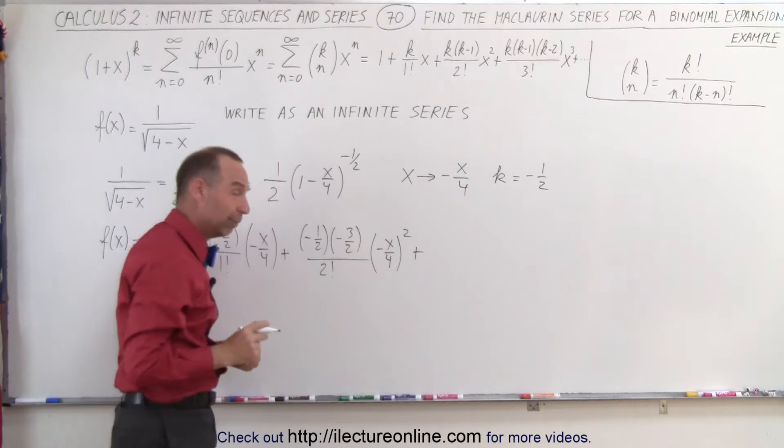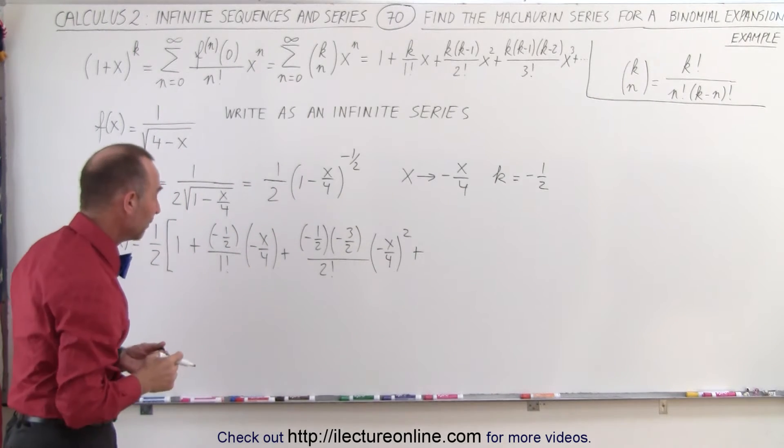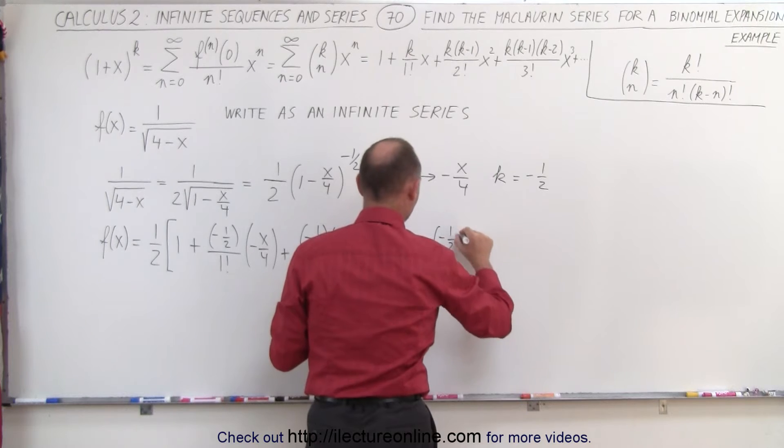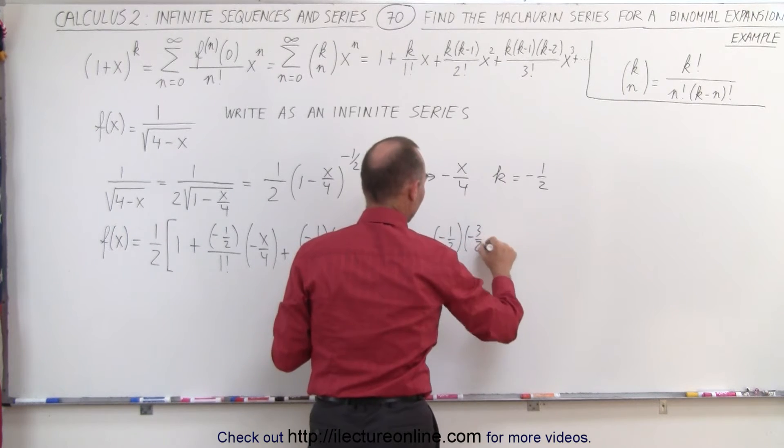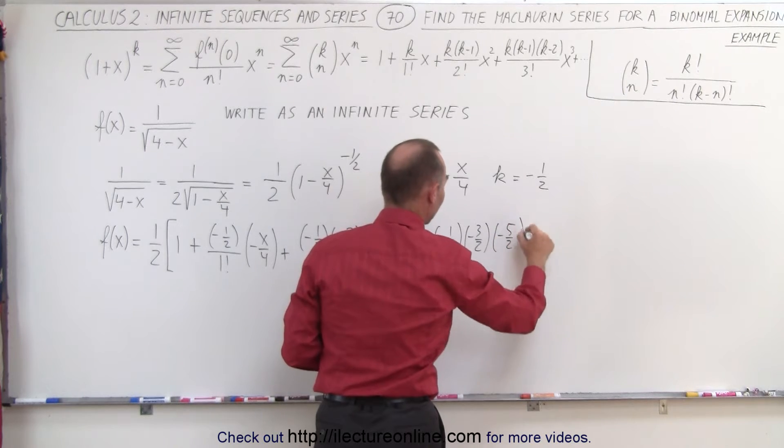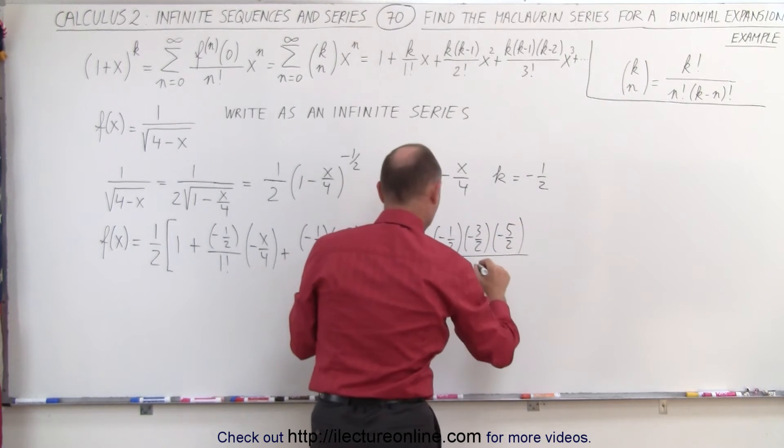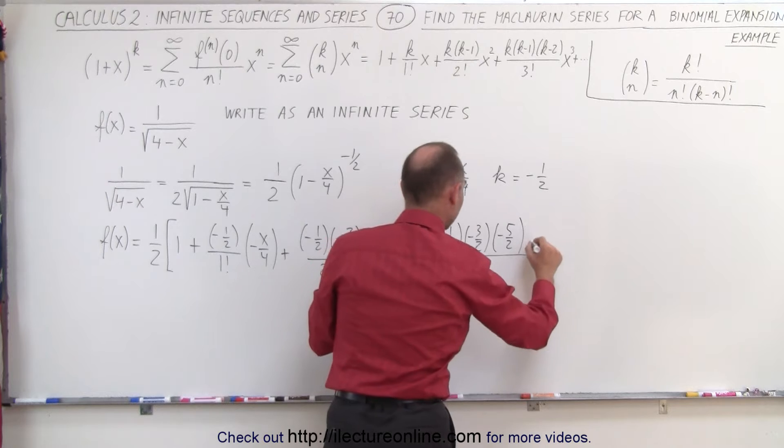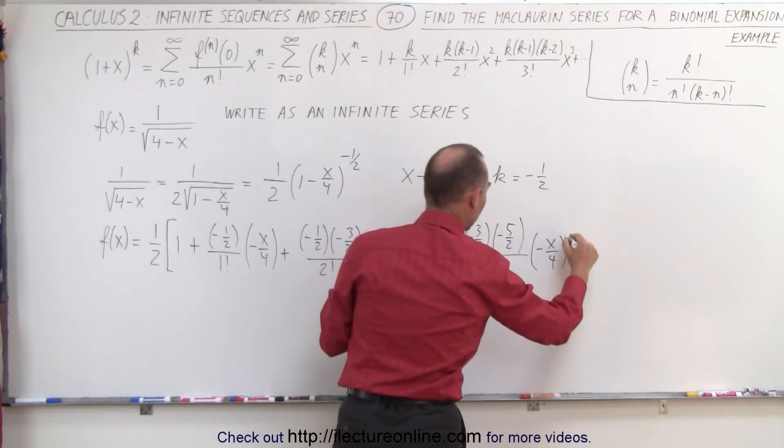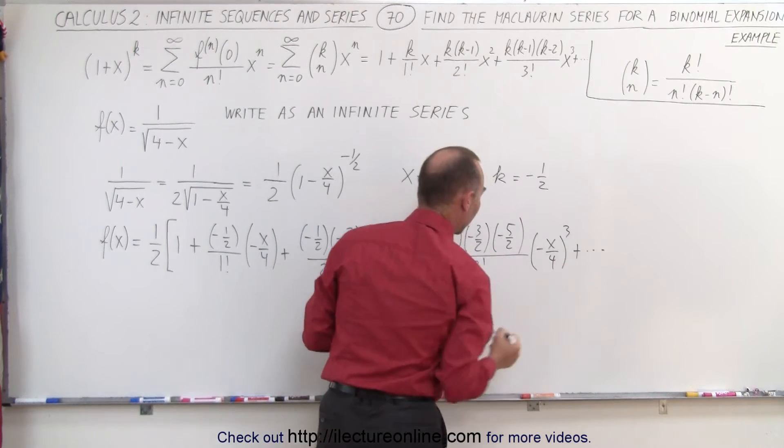Now let's go for the third term and you begin to see the pattern here. All right so here we have minus 1 half, minus 3 halves, and then k minus 2 becomes minus 5 halves all divided by 3 factorial times the quantity minus x over 4 to the third power and on like that. Oh we need a closing bracket.